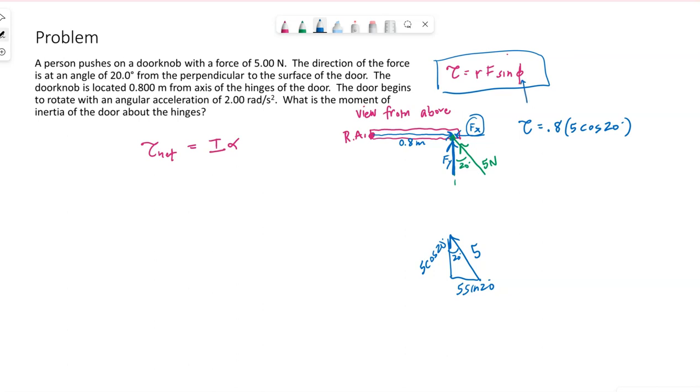As a reminder, phi has to be the angle between R and F. We have to measure from the door out to that force. Technically, we could find this complementary angle as well. That would still work. Using this RF sine phi equation, we would have 0.8 meters for that lever arm, the distance from the rotation axis out to the force, a force of 5 Newtons. But then we would need to take the sine of 90 plus 20, so 110 degrees, which is totally fine. If that's the way that makes sense to you, then do it that way, but just be careful.